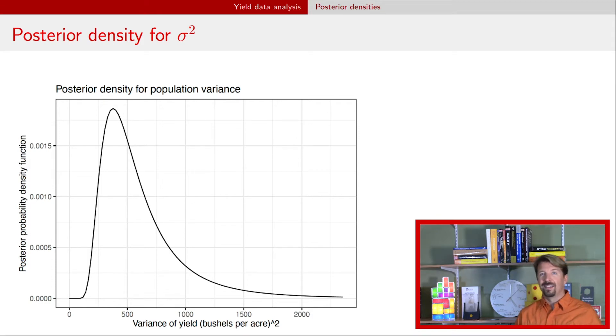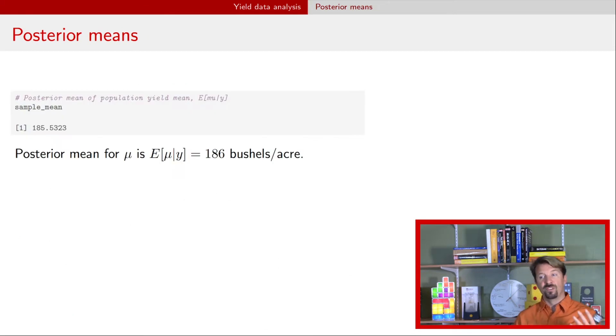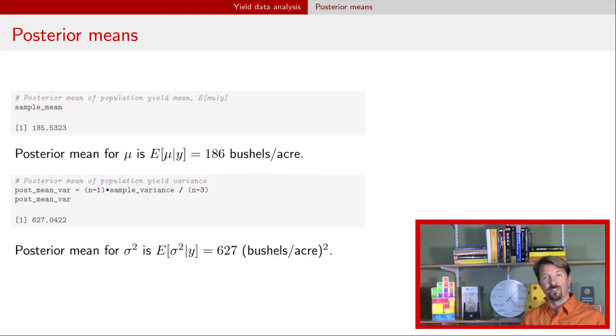Okay, now, as usual, it's hard to sort of hand somebody a density, and so usually we will summarize those densities with a few lower-dimensional statistics. And so we might be interested in getting, say, posterior means. So here's the posterior mean for the population mean yield. So the population mean yield is expected or estimated. Our best guess about that value is 186 bushels per acre. Similarly, we can get the posterior mean for the variance. That is the variance of yield in Iowa. And we find that that's 627. And now notice that the units here are bushels per acre squared. In the previous video, we talked about how the units for a variance are the squared units of whatever the original units are. So there's an example of those squared units. And that makes this a little bit hard to interpret.